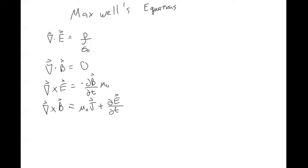This is doing calculus in three dimensions, so you guys don't need to know that these triangles are different. The triangles that are dot products with vectors are called divergences, and then the triangle with a cross product is called a curl.